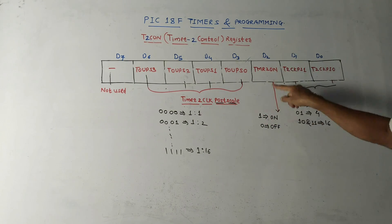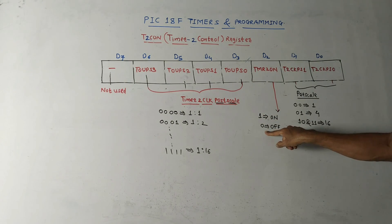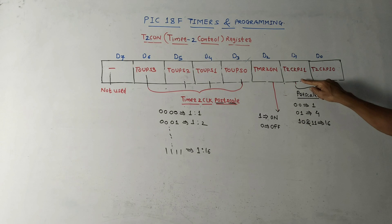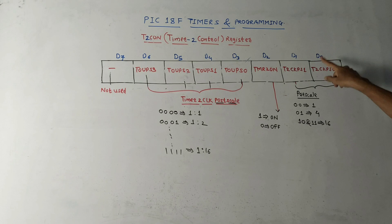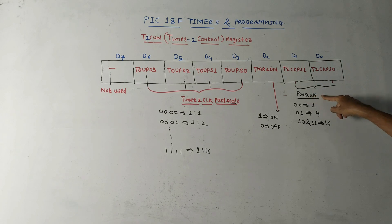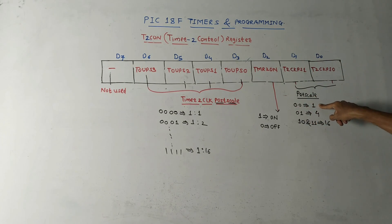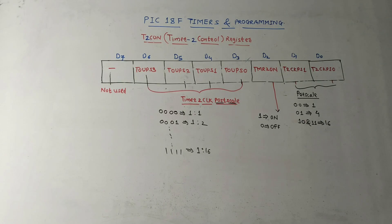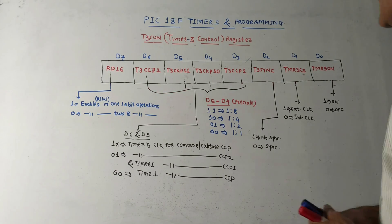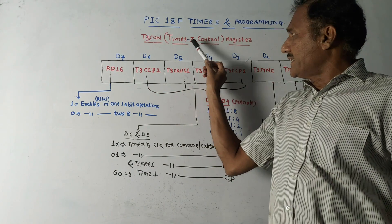Those are the bits responsible for post-scaling. Next is TMR2ON: if this bit is 1, Timer 2 is switched on; for 0 it is switched off. The last two bits are d1 and d0, which are the pre-scale bits. 0 0 indicates pre-scaling by 1; 0 1 gives pre-scaling by 4; for 1 0 and 1 1, pre-scaling is by 16.